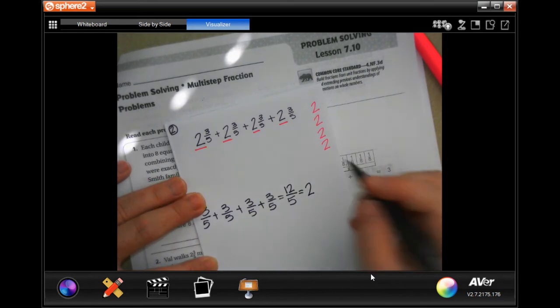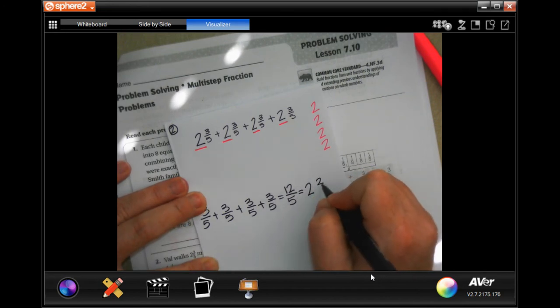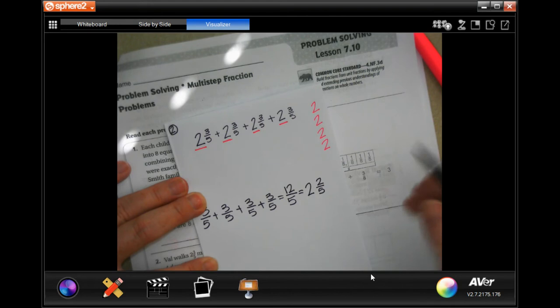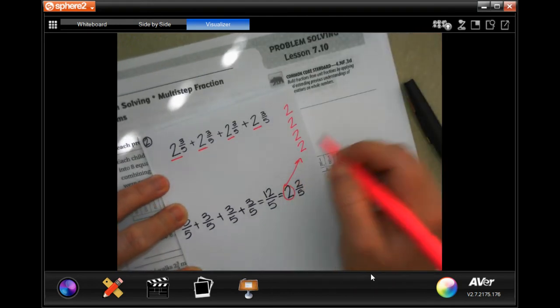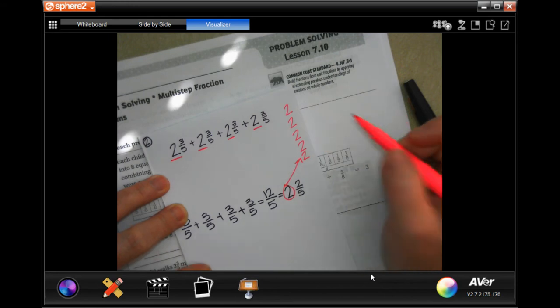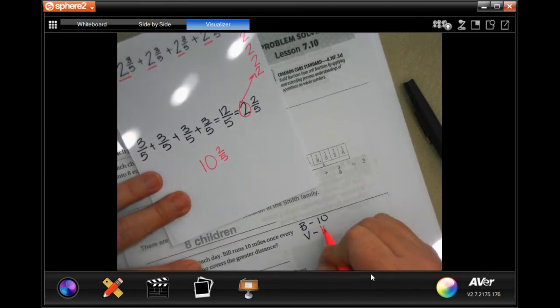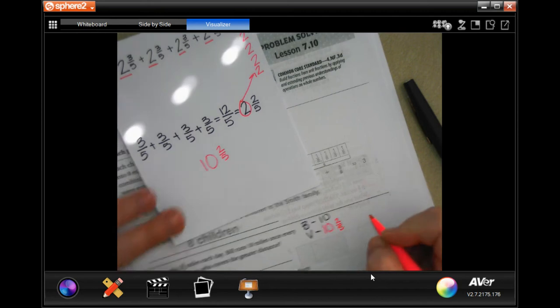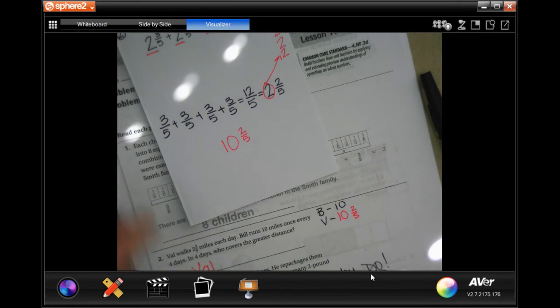That's for 10. 12 minus 10 is 2, and my denominator stays a 5. So I'm going to take that whole number and I'm going to move it up there. So now I have 2, 4, 6, 8, 10 and 2/5. So who covers the greatest distance? Don. Make sure that y'all show your work.